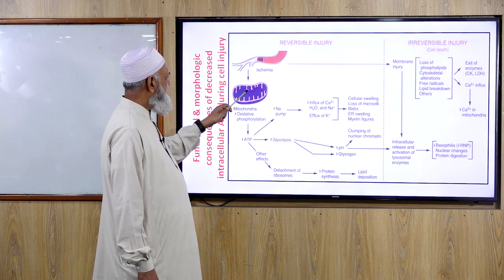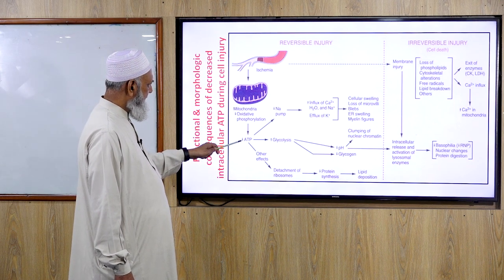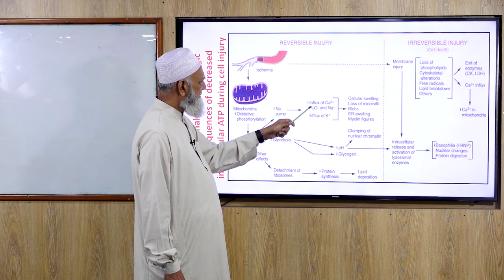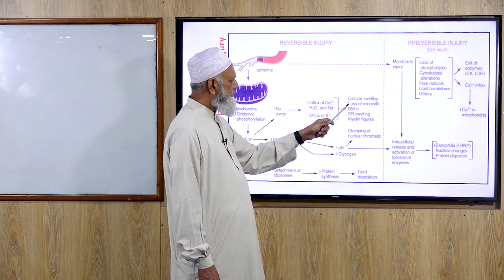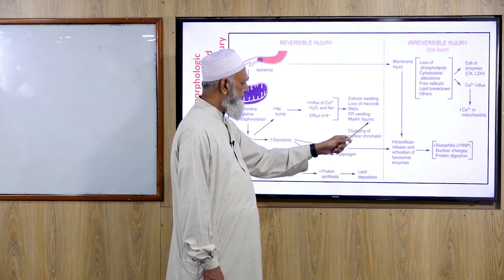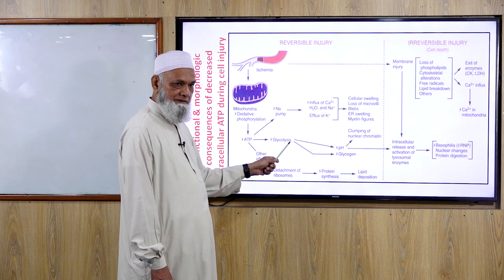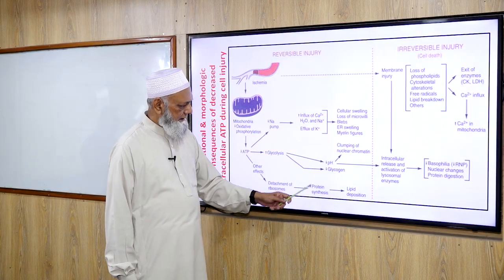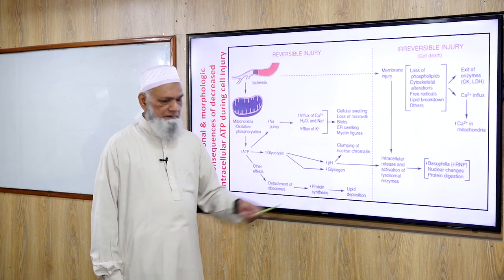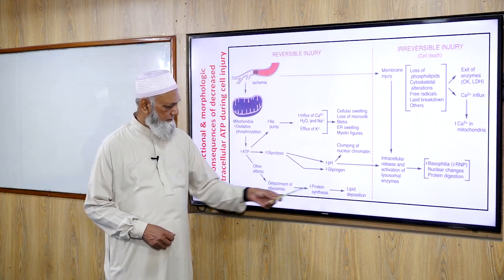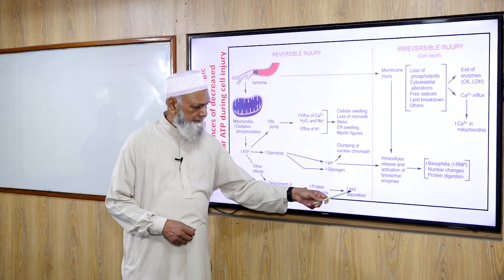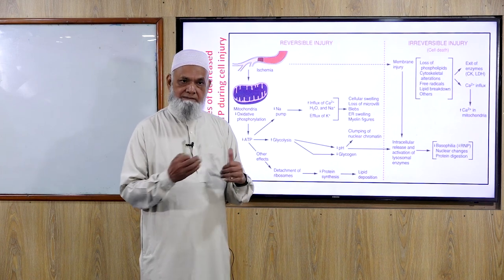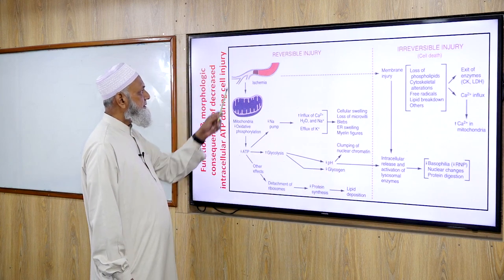In ischemia and hypoxia, mitochondria show decreased oxidative phosphorylation and decreased ATP. Sodium pump decreases, glycolysis increases, and ribosomes detach. Decreased sodium pump causes influx of calcium, water, and sodium and efflux of potassium, leading to cellular swelling, loss of microvilli, blebs, endoplasmic reticulum swelling, and myelin figure formation. Increased glycolysis causes decreased pH due to lactic acidosis and decreased glycogen; decreased pH causes clumping of nuclear chromatin. Detachment of ribosomes causes decreased protein synthesis and lipid deposition, because lipid acceptor protein decreases when ribosomal protein synthesis is reduced. This portion represents reversible injury.